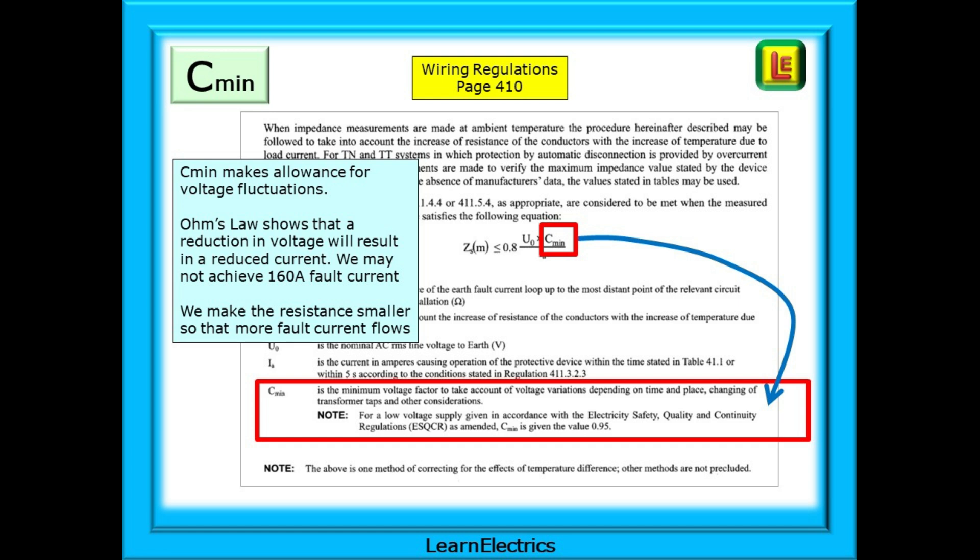In this case we are interested in voltage reductions. Ohm's law shows us that a reduction in voltage will result in a reduced current. If the supply voltage reduces to its allowable minimum we may not achieve 160 amps of fault current in some circuits and the breaker may not operate in the required disconnection time. So we make the resistance smaller so that more fault current will flow and restore the balance.